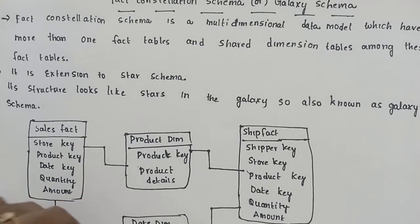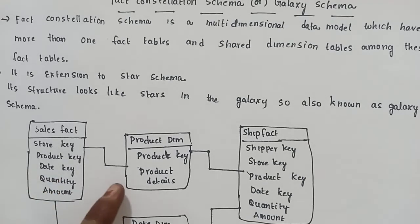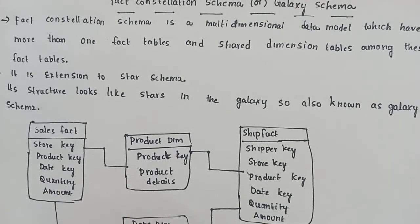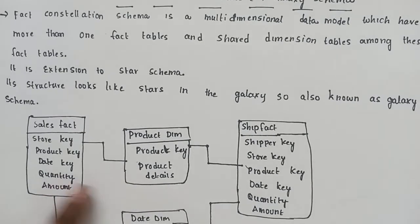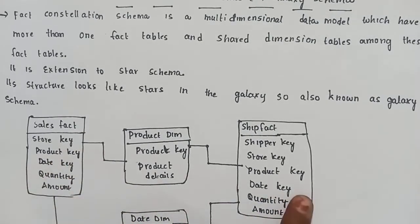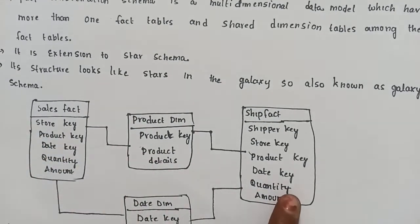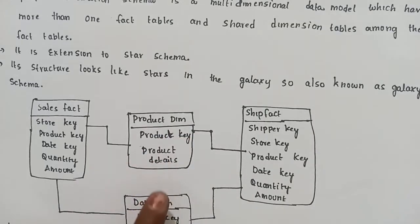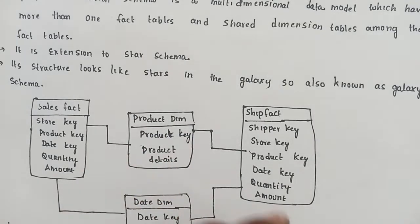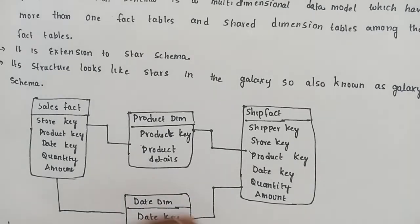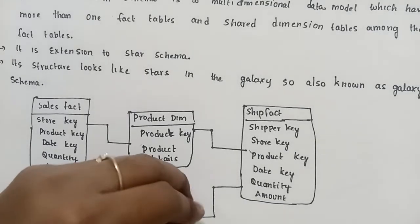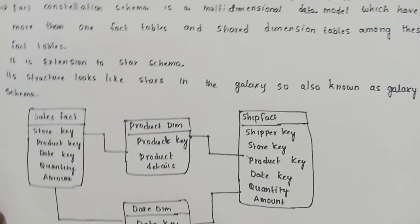In fact constellation schema, dimension tables are shared among the fact tables. That is the key difference - while star and snowflake schemas have one fact table, fact constellation schema can have multiple fact tables with shared dimension tables.